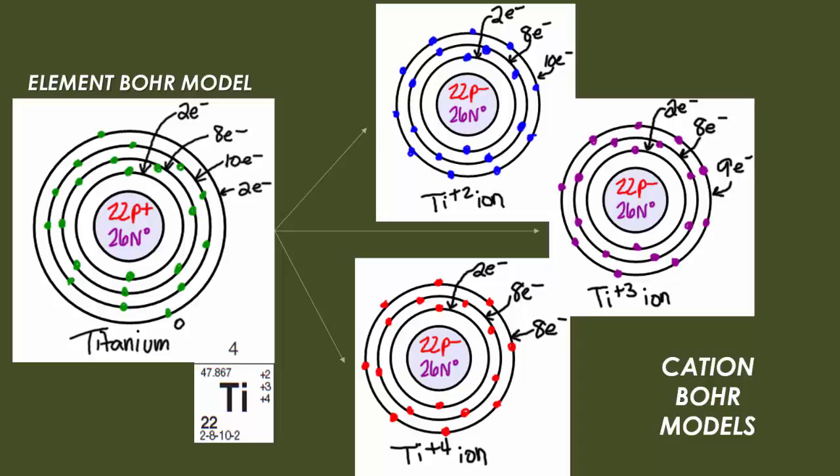Now remember, the atomic number, 22, means you have 22 electrons. The positive charge, 2, 3, or 4, means the number of electrons lost. And you always lose from the outermost and then work your way in.